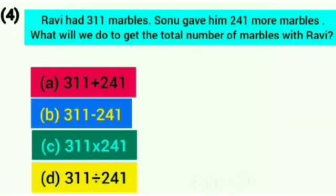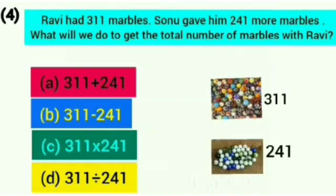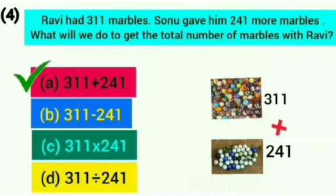Question number 4: Ravi had 311 marbles. Sonu gave him 241 marbles. What will we do to get the total number of marbles with Ravi? We know that to get the total number of things, we do addition. So to get the total number of marbles with Ravi, we will add the marbles Ravi already had with the marbles given to him by Sonu. This answer is given on option A, so we will put a tick on option A.